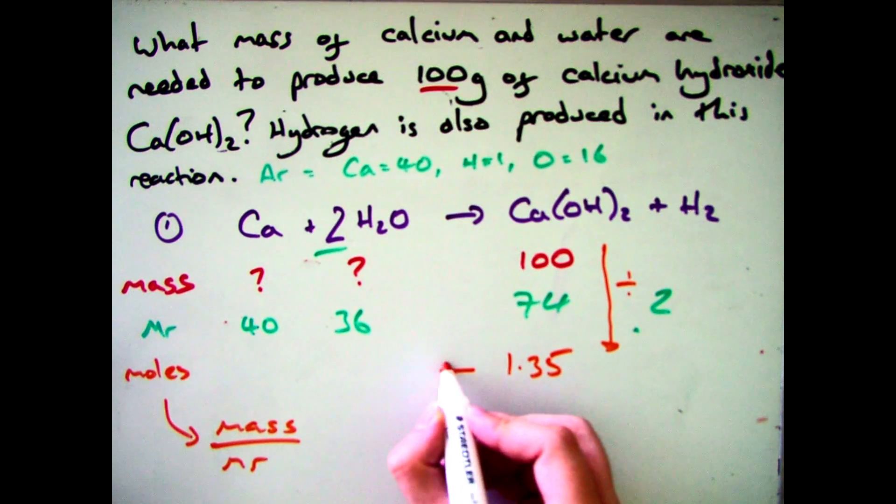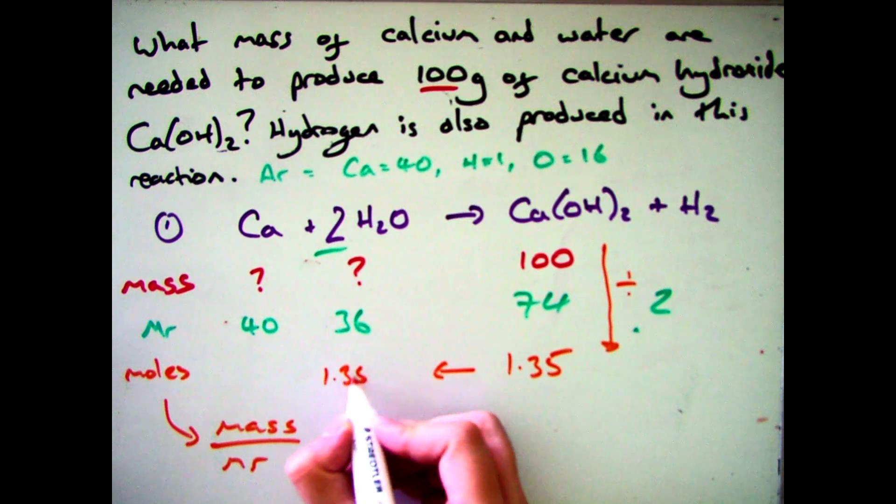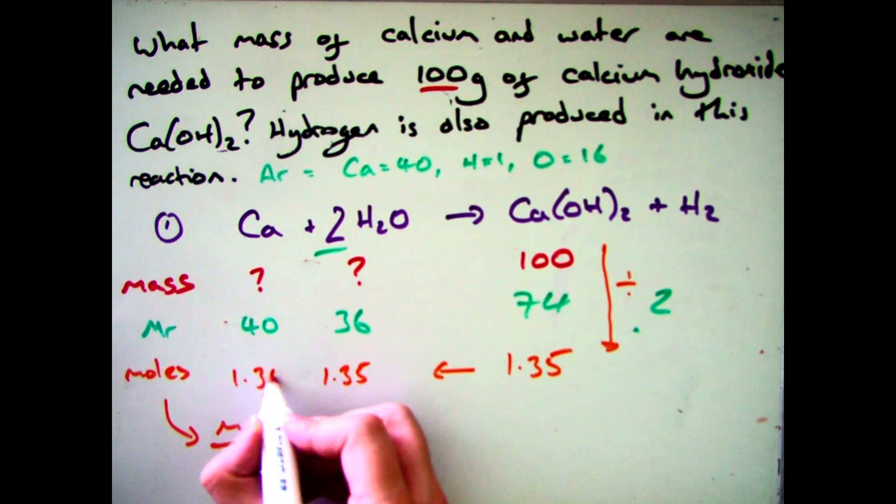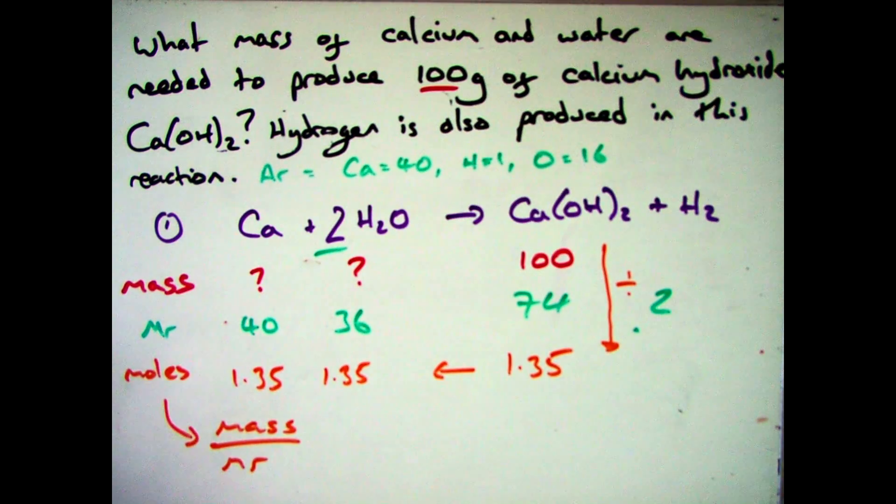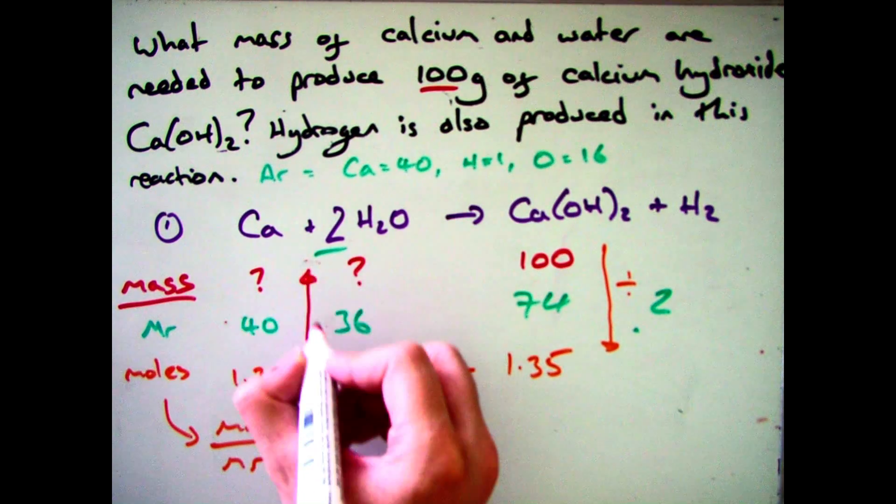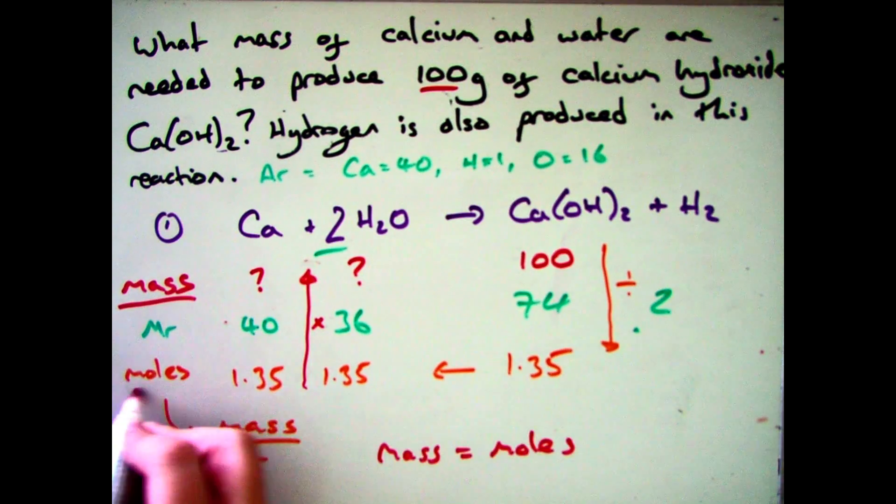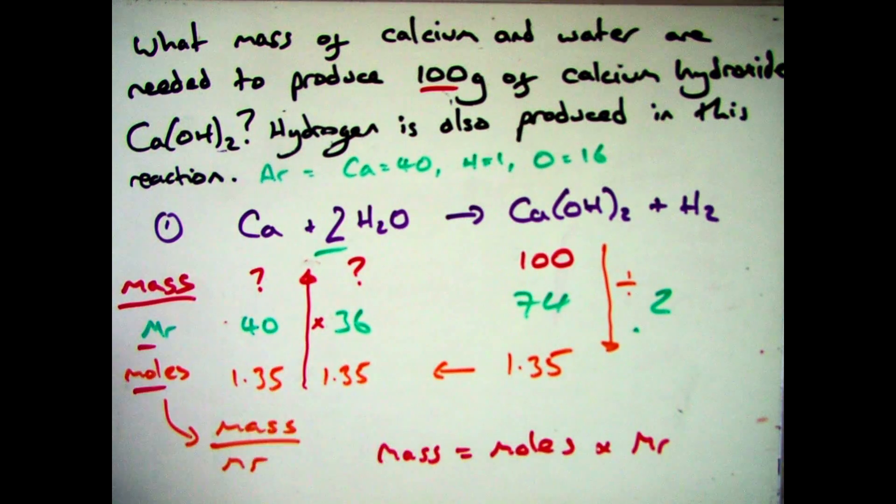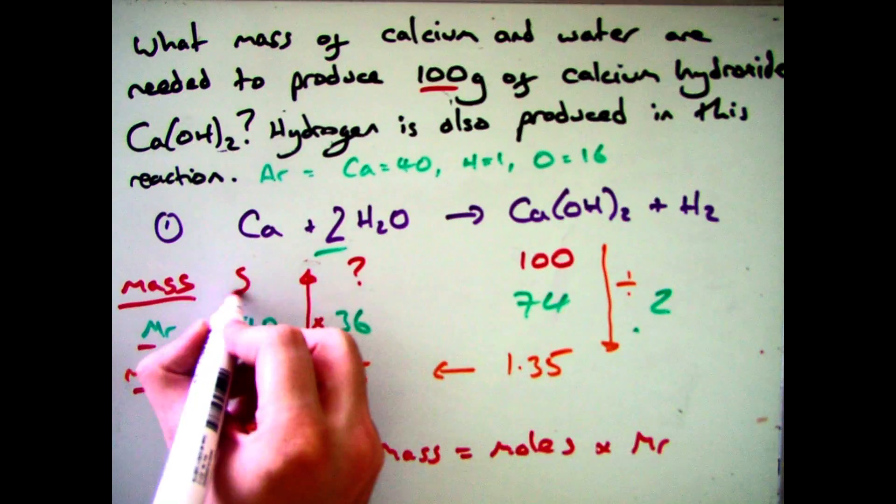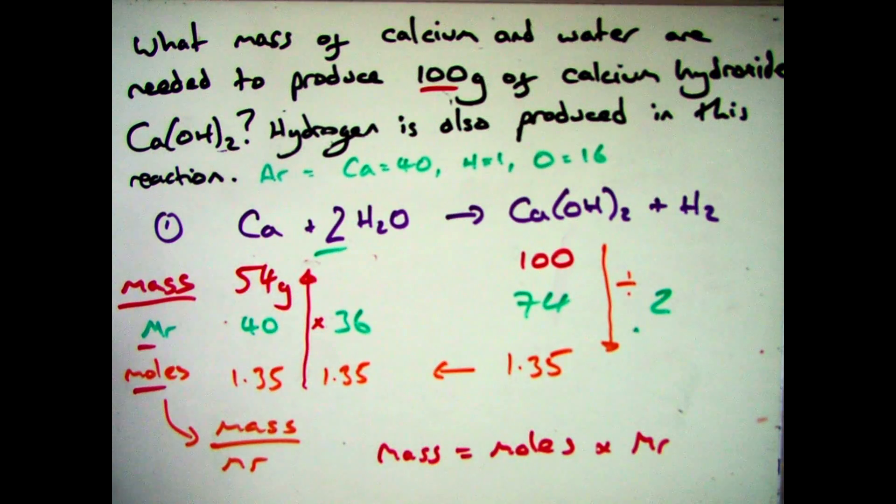So let's go back. 100 divided by 74 gives me 1.35. We know that's the same all the way across because we have a balanced equation. And then I just need to multiply it up. So this is showing me mass is moles times by MR. So 1.35 times by 40 gives me 54. And 1.5 times 36 gives me 48.6.